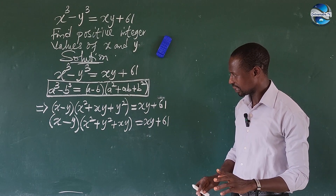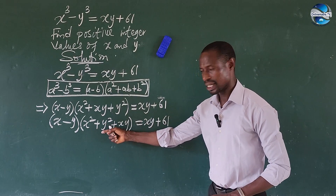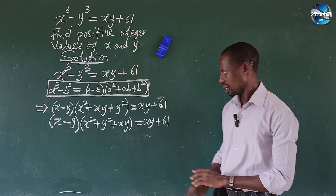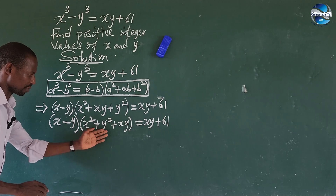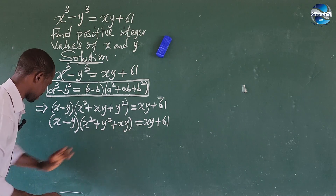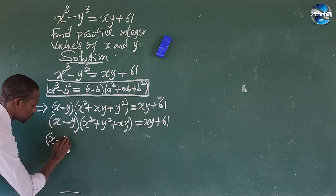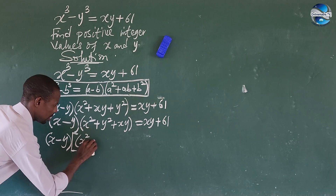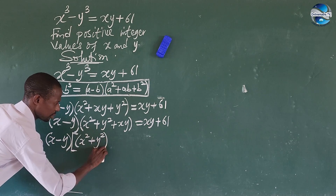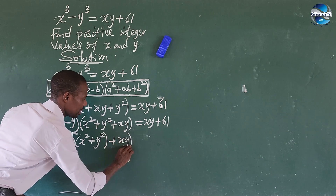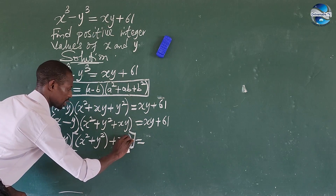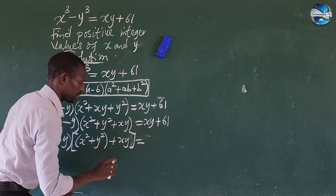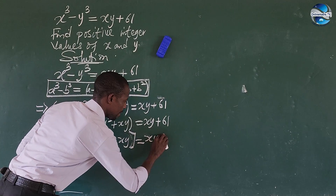Looking at this carefully, I want to separate the xy term. If I bracket this out and introduce square brackets, we get: (x minus y) times [x² plus y²] plus xy, equal to xy plus 61. Let me erase and rewrite so it's clear: (x minus y)[x² + y²] + xy·(x minus y) equals xy plus 61.